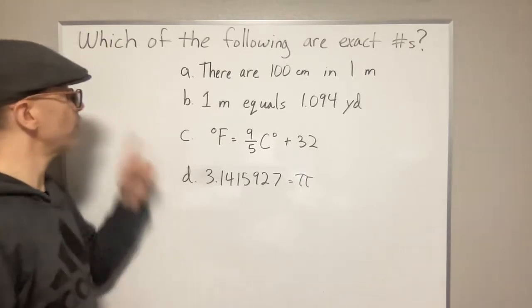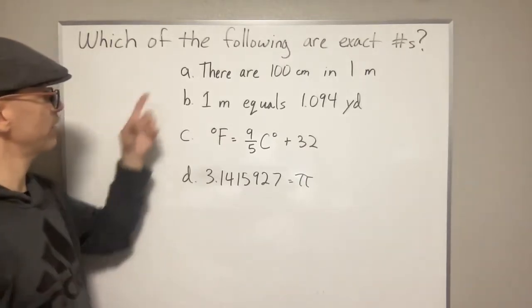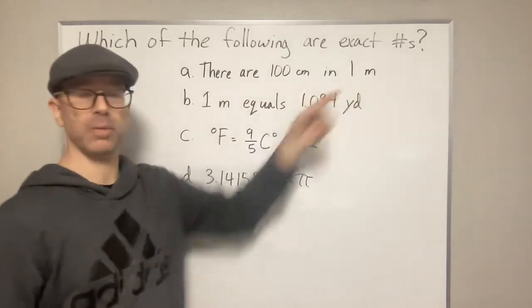So let's go over some examples here and see if we can tell if they're exact or not exact numbers. Okay, so if we're looking at A, it says there are 100 centimeters in one meter.